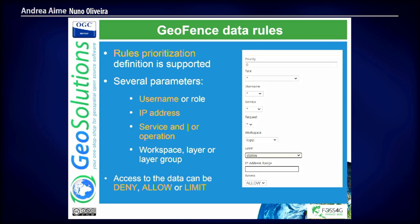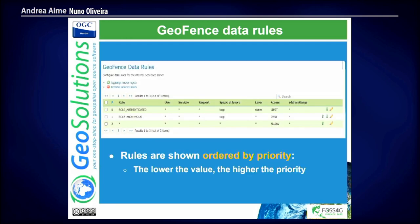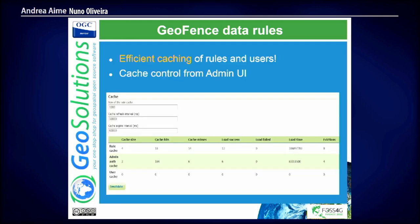GeoFence rule priority: rules with a higher priority are applied first. If you define a rule with priority zero that says everyone can see everything, then everyone will be able to see everything. Of course, GeoFence has a caching mechanism — because stuff is stored in the database, we don't want to go there every time for performance reasons. This is mostly transparent, but if you are managing data rules and you see them not being updated, you go to the UI and clean the cache.